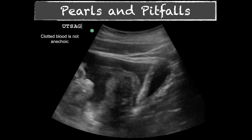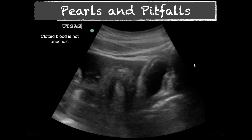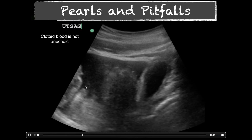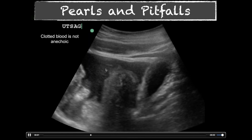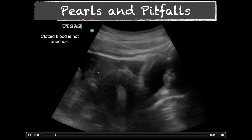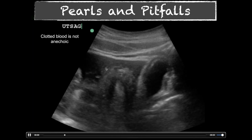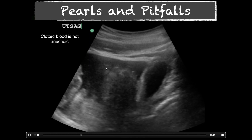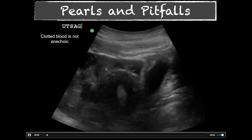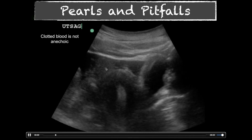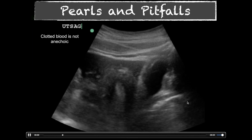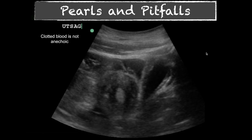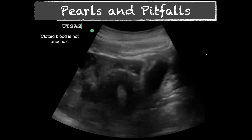In this female patient, we can see the bladder and uterus with the endometrial stripe. There's a large anechoic area but with internal echoes within it. When you see internal echoes within what would otherwise look like free fluid, that is typically clotted blood. Clotted blood may not look fully anechoic — it can appear somewhat isoechoic as it organizes. Pay close attention, because clotted blood may be missed if you're only looking for purely anechoic fluid.